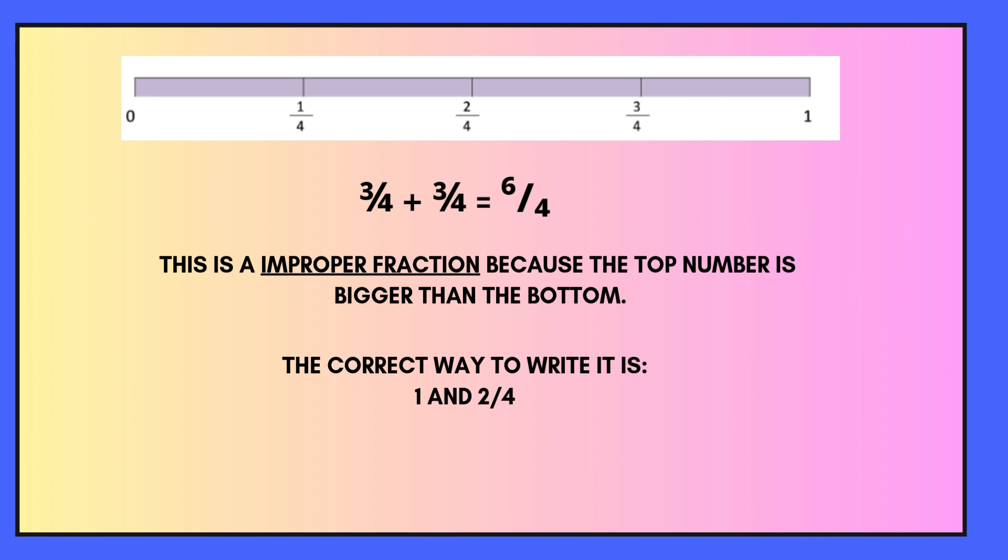The answer here is showing us 6 quarters. That doesn't look right. That's because this is an improper fraction because the top number is bigger than the bottom number. The correct way to write it is 1 and 2 quarters.